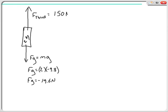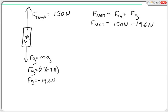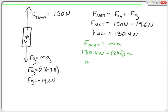In Part A, the rocket can achieve a thrust of 150 newtons. F net equals F thrust plus FG, so F net equals 150 newtons minus 19.6 newtons, giving F net equals 130.4 newtons. Using Newton's second law: 130.4 newtons equals 2 kilograms times acceleration, so acceleration equals 65.2 meters per second squared.